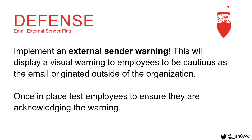One of the defense suggestions I have is to use an external sender warning. This can be placed in the subject line, body of the email, or both. It's really a visual flag for employees letting them know the email came from outside the organization, so be cautious with opening attachments or clicking on any links. It's important to test employees on this — whether you just set this control up or have had it in place — by sending them emails impersonating internal senders to see if they're still clicking links or opening attachments. If so, they probably don't understand what that warning is and may need retraining.